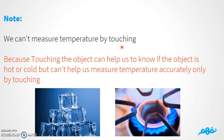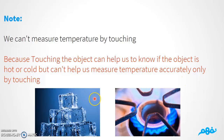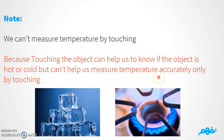Can we measure temperature by just touching? Actually, we cannot. Touching an object can help us know if it is hot or cold, but we cannot measure temperature accurately only by touching. We can say something is hot or cold, but we cannot say it is 30 Celsius or 40 Celsius — we cannot measure temperature accurately by touch alone.